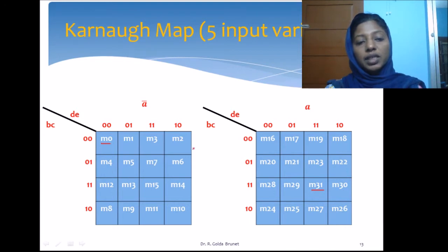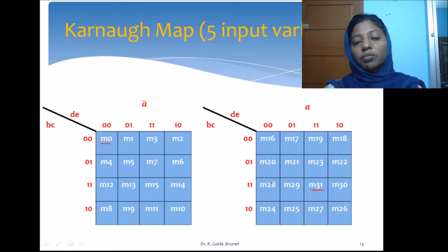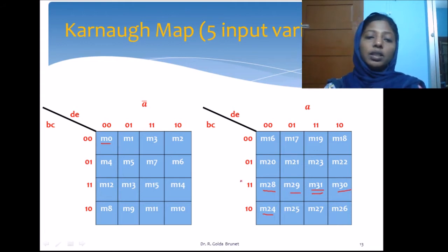The minterms in the A-bar map are exactly like a 4-variable Karnaugh map. Then we start from M16, M17, M18, M19, M20, M21, M22, M23. We skip one row following the Gray code sequence to ensure those two rows are adjacent. Then M24, M25, M26, M27 and M28, M29, M30, M31 — totaling 32 minterms.